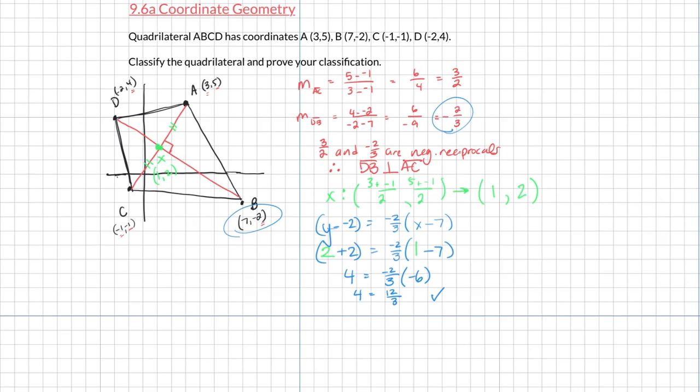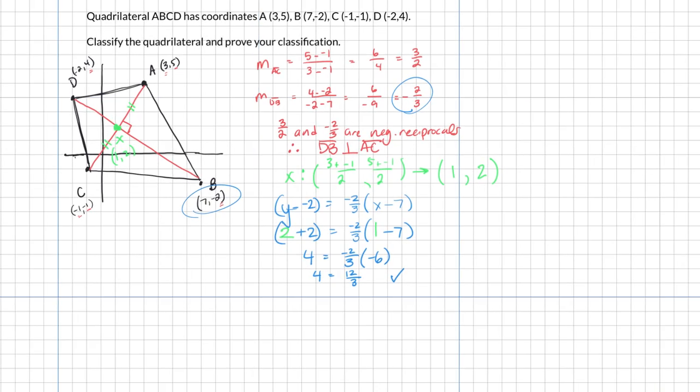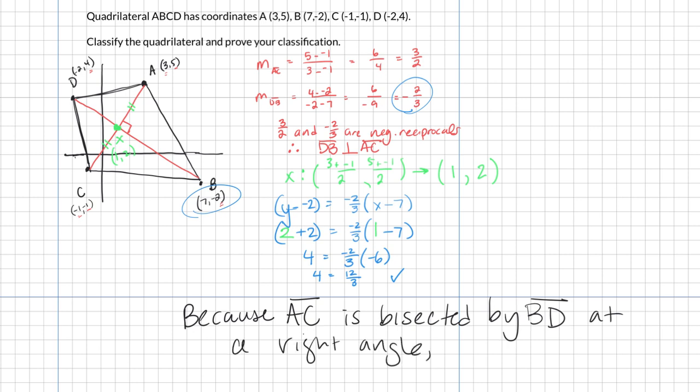So my final proof right here is because AC is bisected by BD at a right angle, A, B, C, D is a kite. And there we go. That's it, ladies and gentlemen. Hope this example helps you out with what you're going to do and the rest of delta math.